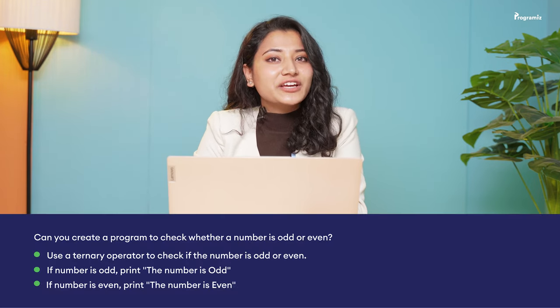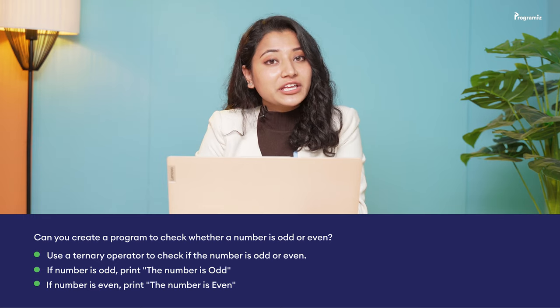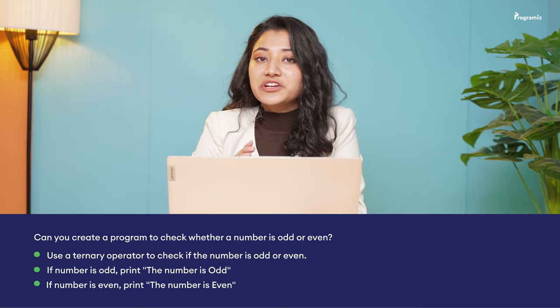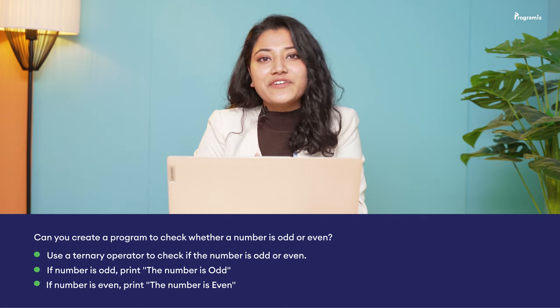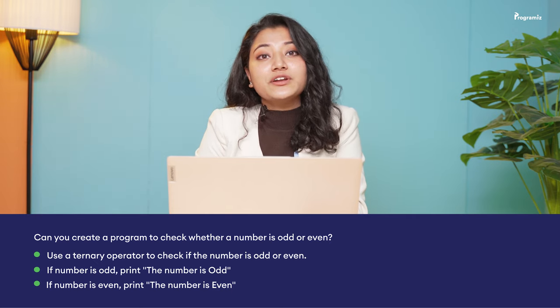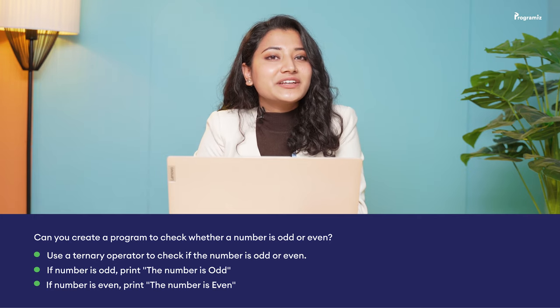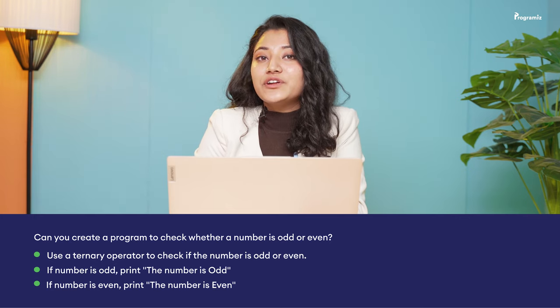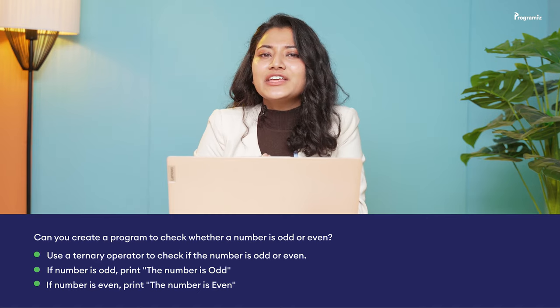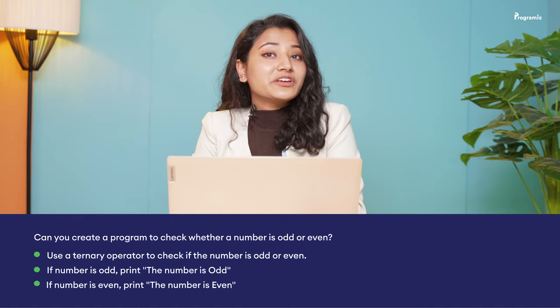Now to revise what we have learned, here is one programming task for you to solve. Can you create a program to check whether a number is odd or even? Create a variable named number and assign a value to it. Then, using a ternary operator, check if the number is odd or even. If the number is odd, print 'the number is odd'; if the number is even, print 'the number is even'. You will find the answer in our GitHub repository. The link is in the video description.